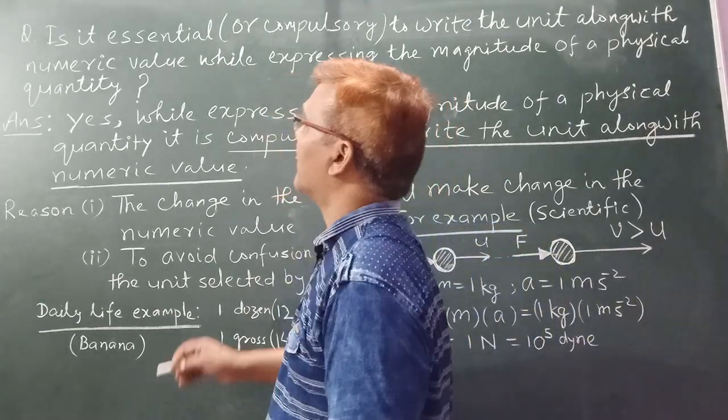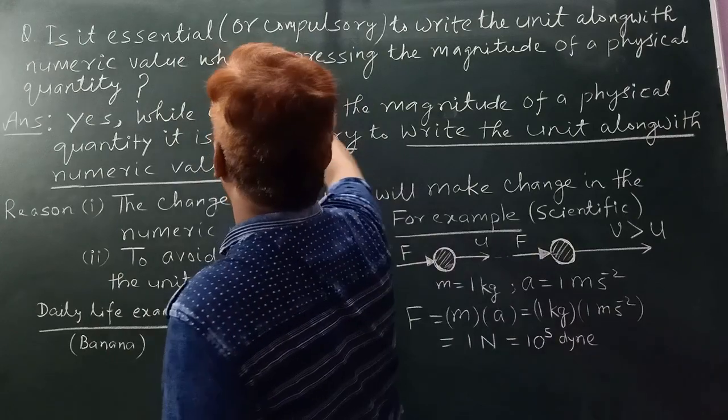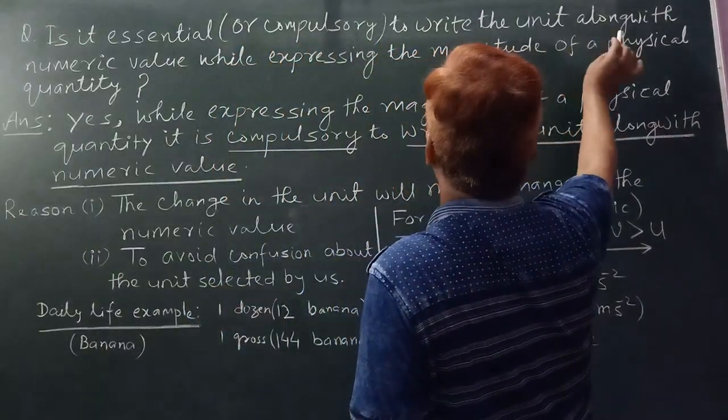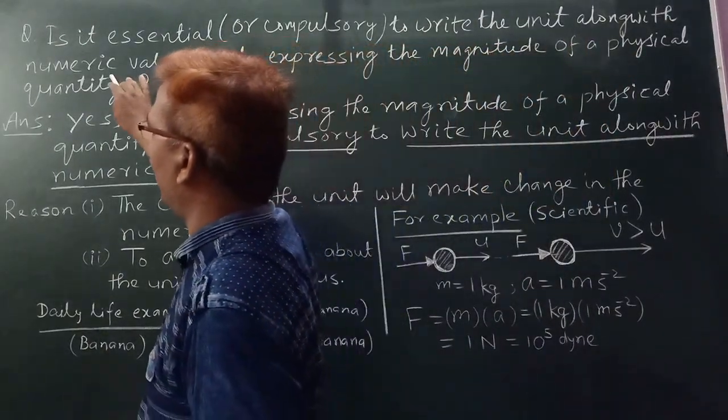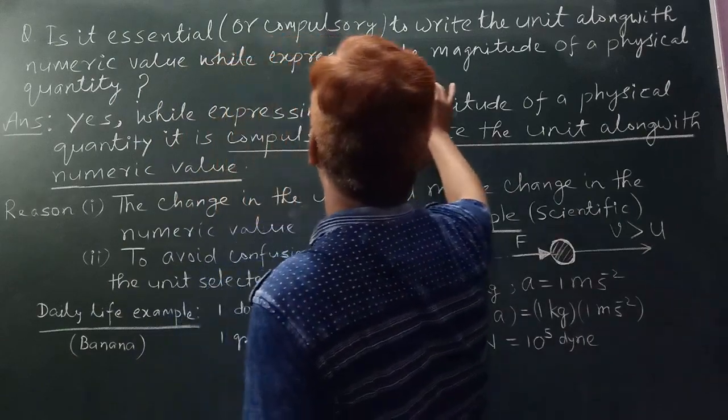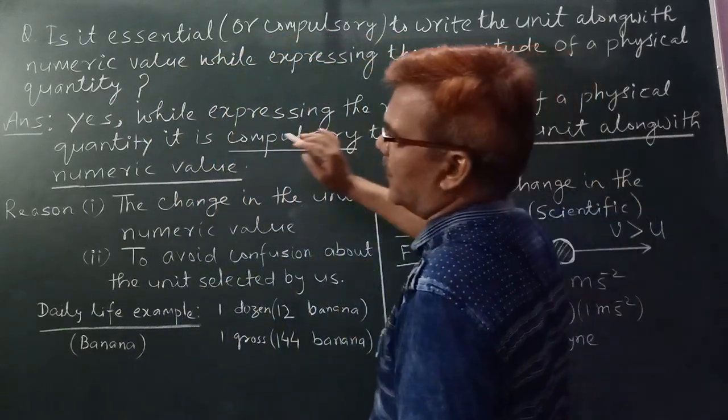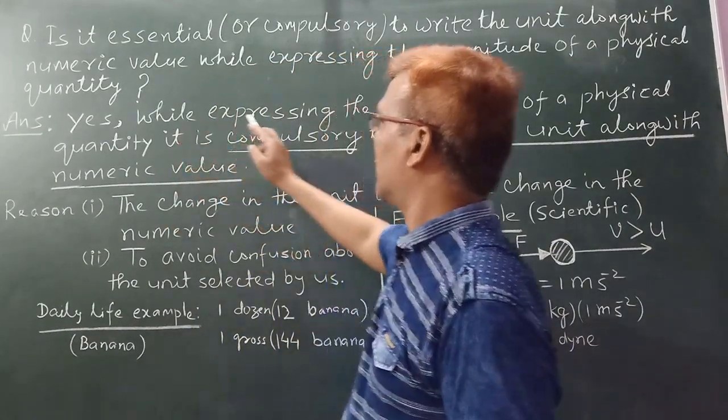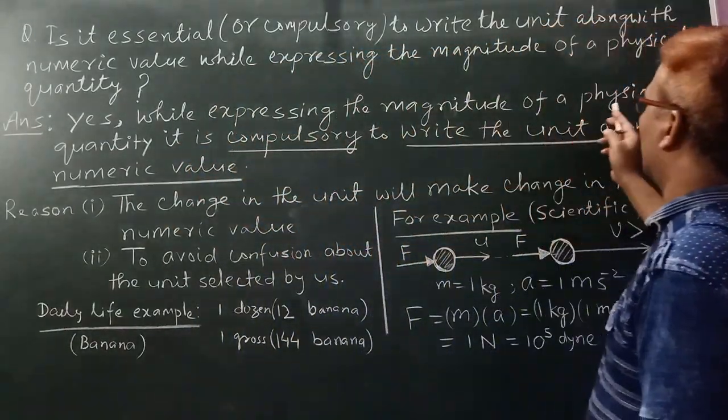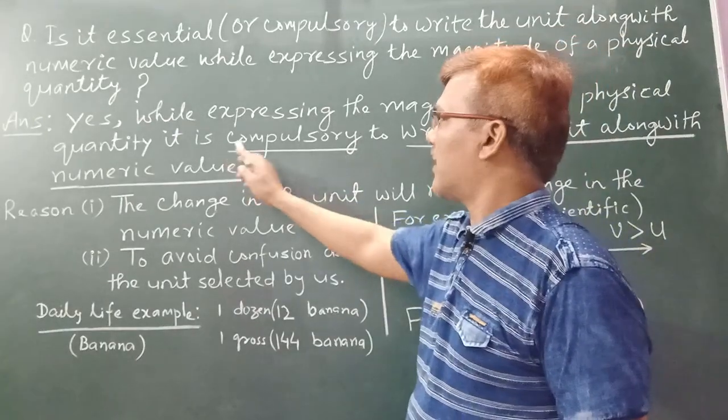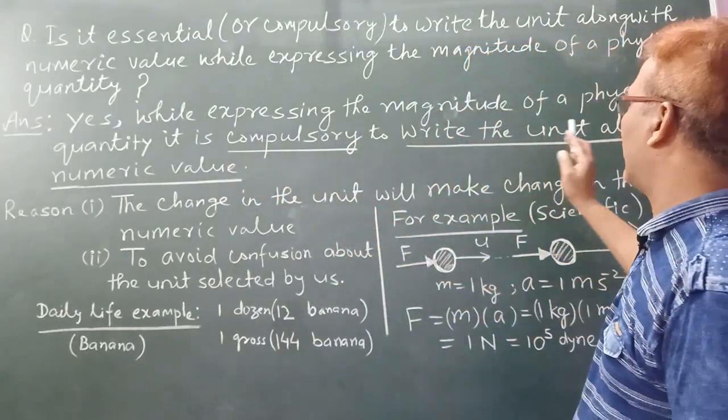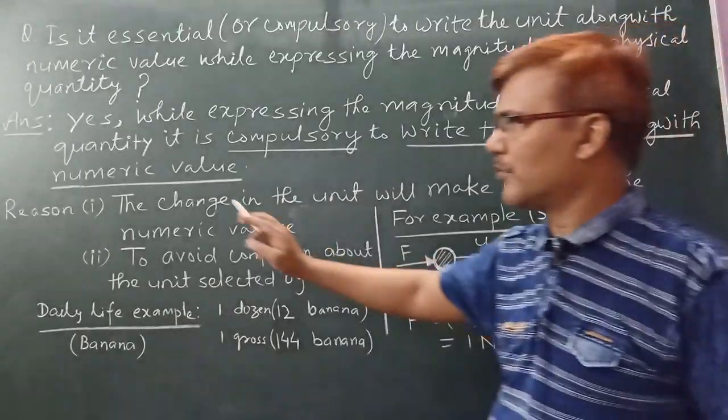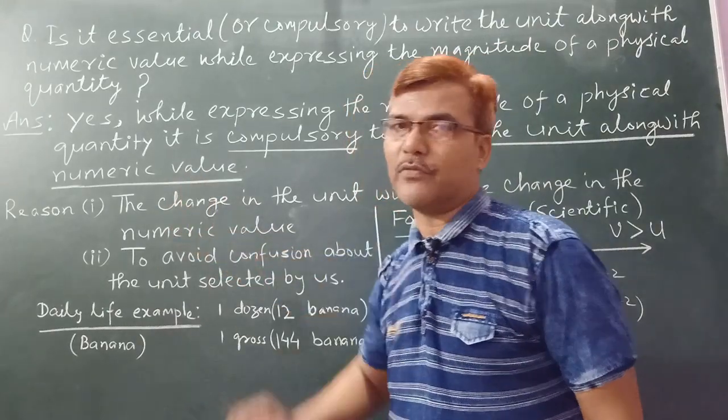What is the question? Is it essential or compulsory to write the unit along with the numeric value while expressing the magnitude of the physical quantity? So your answer is yes. While expressing the magnitude of the physical quantity, it is compulsory to write the unit along with the numeric value.